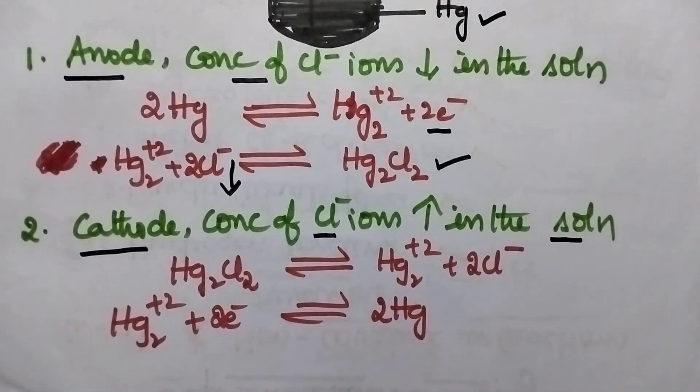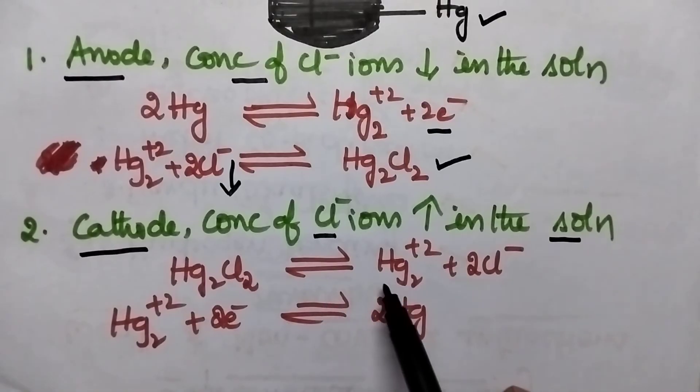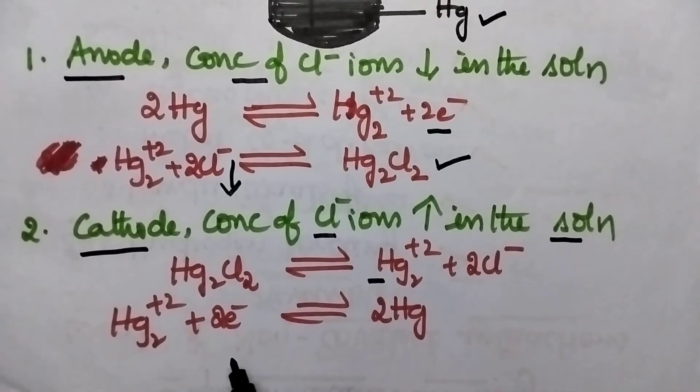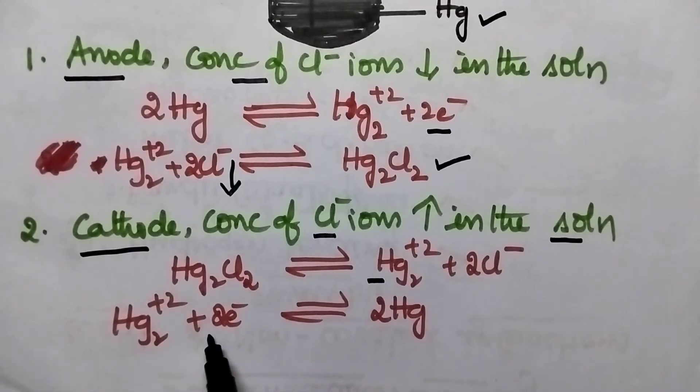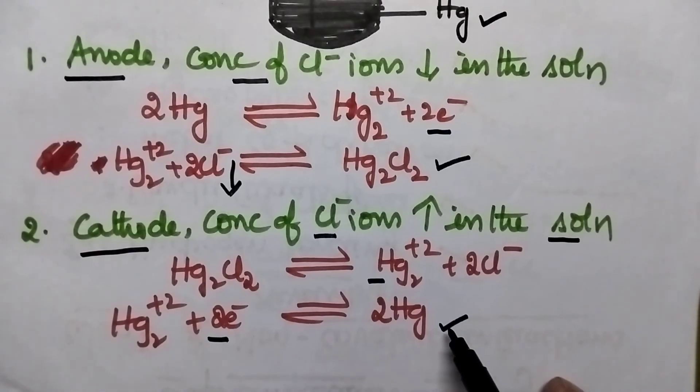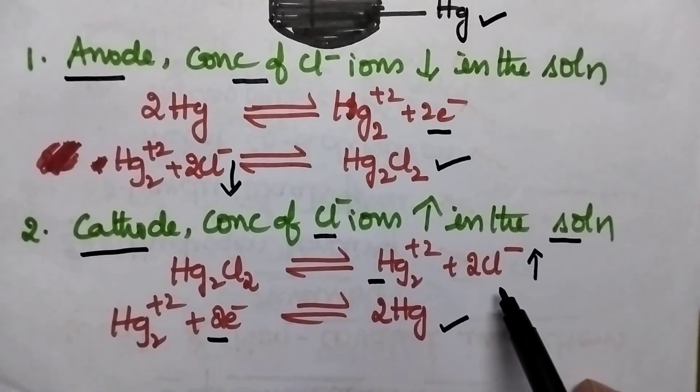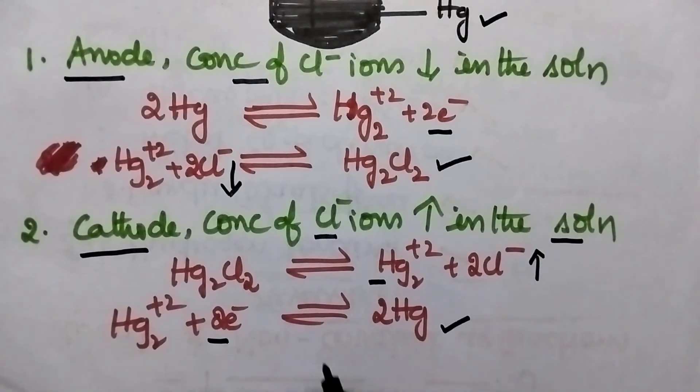Coming to the reactions taking place at the cathode, initially the mercurous paste undergoes dissociation and results in the formation of mercurous ions and Cl minus ions. These mercurous ions gain the electrons and gets converted into liquid mercury. So here always there will be some increase in the concentration of Cl minus ions if the calomel electrode is acting as the cathode.